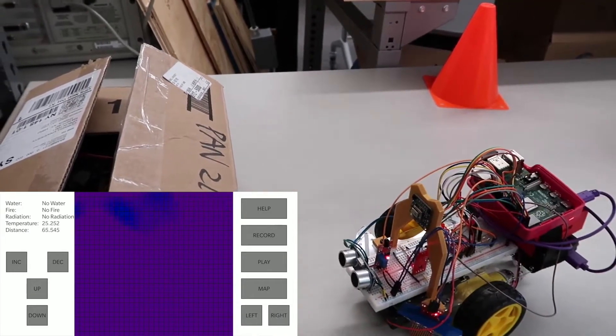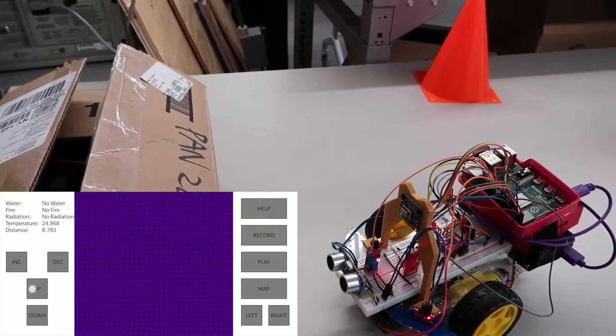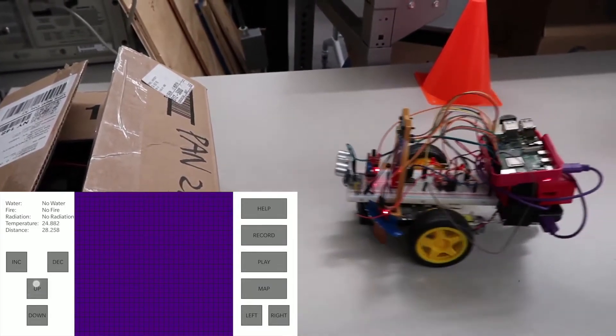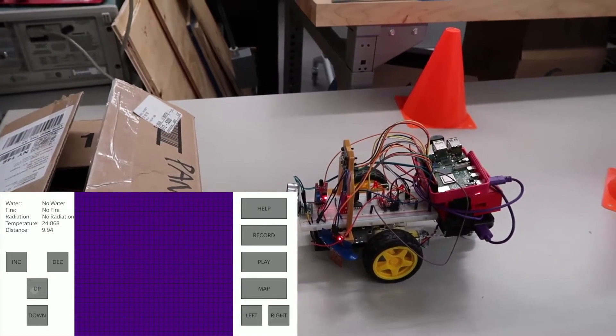The robot can turn and move in all directions and also allows the user to change the speed. The ultrasonic sensor helps the robot see better and prevents it from crashing onto obstacles.